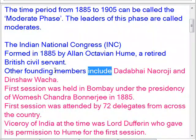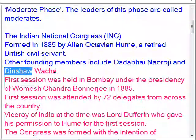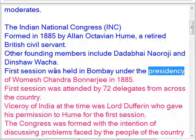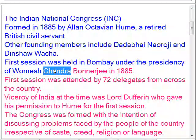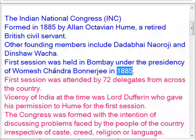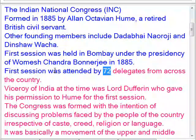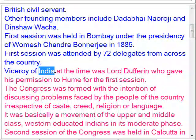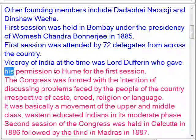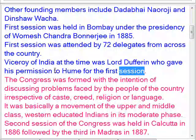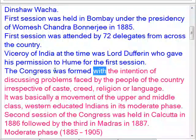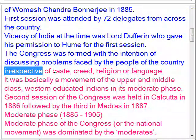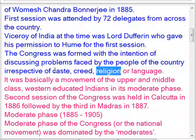Other founding members include Dadabhai Naoroji and Dinshaw Wacha. The first session was held in Bombay under the presidency of Womesh Chandra Banerjee in 1885, attended by 72 delegates from across the country. The Viceroy of India at the time was Lord Dufferin, who gave his permission to Hume for the first session. The Congress was formed with the intention of discussing problems faced by the people irrespective of caste, creed, religion, or language.